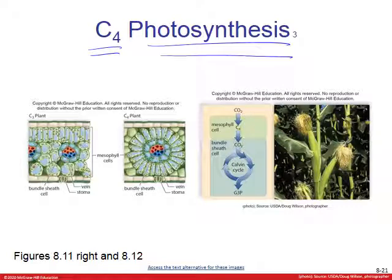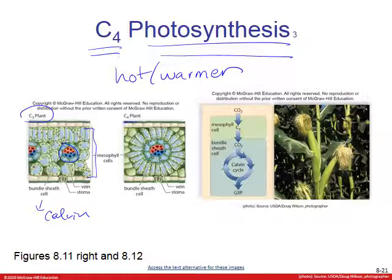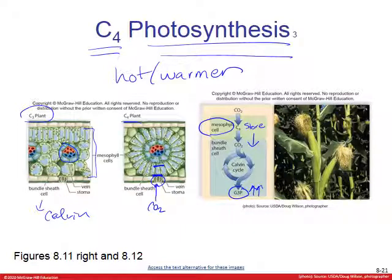C4 photosynthesis is a modification for hotter, warmer climates. In C4 plants, CO2 enters through the stomata and is stored in mesophyll cells. This prevents the inefficient G3P production. When necessary, the CO2 is released into bundle sheath cells where the Calvin cycle occurs, yielding a higher amount of G3P.